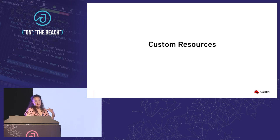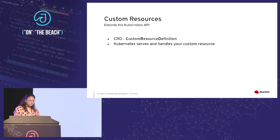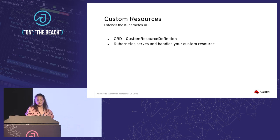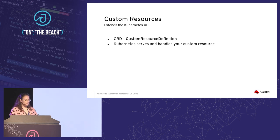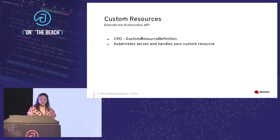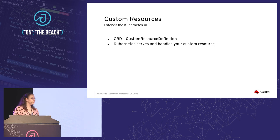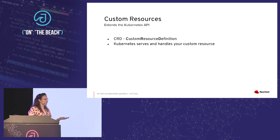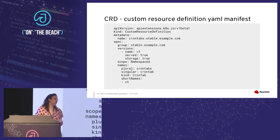Now that we understand what a controller is, we want to see what custom resources are, because they're heavily used by operators. A custom resource definition allows you to define your custom resources within Kubernetes. When you define your CRD and create it, Kubernetes creates a new custom resource with the name and schema you provided. The Kubernetes API handles your custom resource for you — you do not need to write your own API server. It's as simple as doing 'kubectl create'.